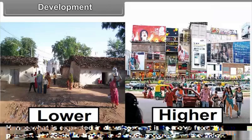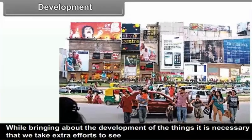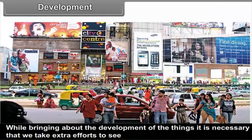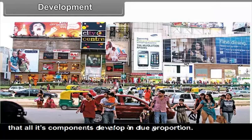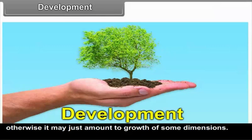What is expected in development is to move from the present condition to a higher and more progressive condition. While bringing about development, it is necessary that we take extra efforts to see that all its components develop in due proportion. If development is all-around, then only it will be called development. Otherwise, it may just amount to growth of some dimensions.